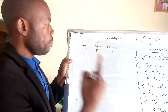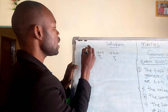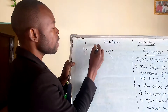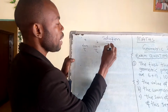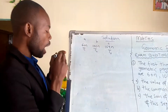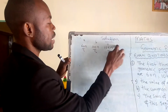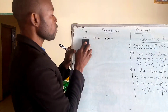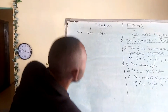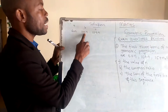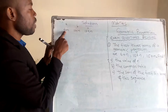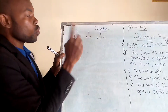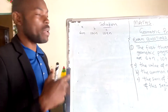I'll use letters to represent the terms. So the first term is given by letter A, the second term is given by letter B, and the third term is given by letter C. So first term is A, second term is B, third term is C.